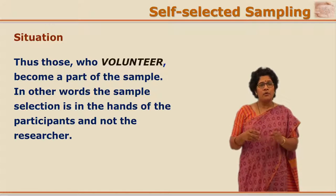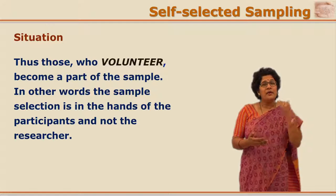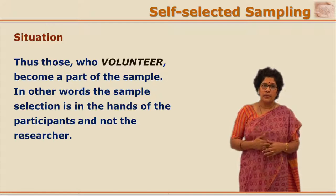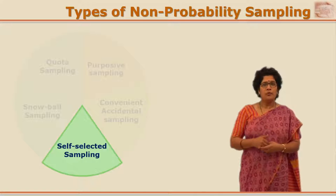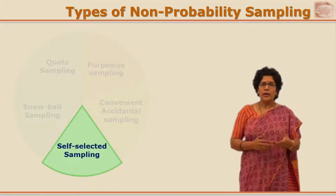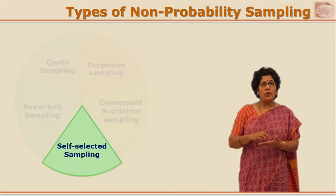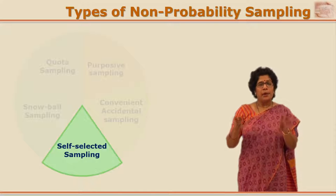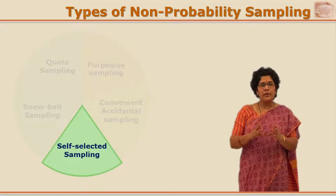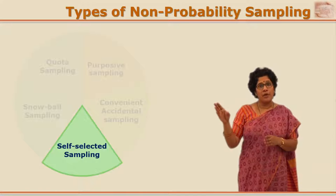In this case, though randomization is not involved, it is also not the researcher's decision who should be part of the study. The decision is in the hands of the participants, and the researcher is left with no other choice but to go along with the volunteers and conduct the study. Generalizations would not be possible and the personal traits of those volunteers would certainly be different, but the researcher will have to proceed, and statistical procedures of higher sophistication will be required at a later stage.